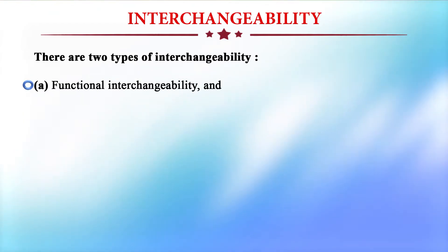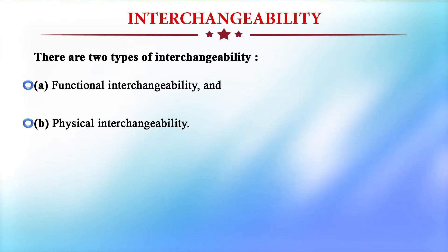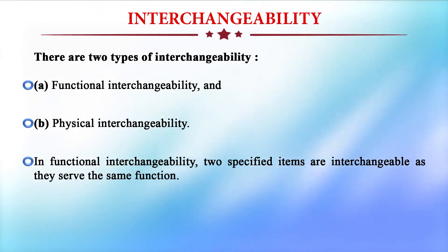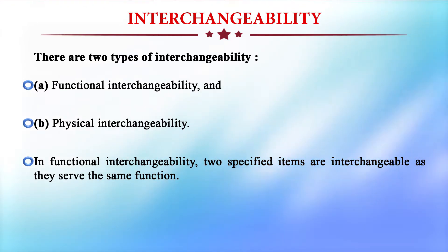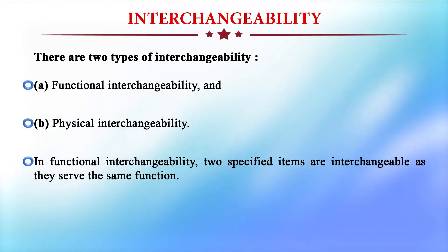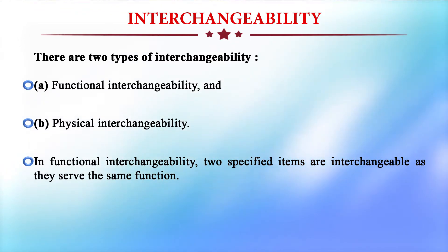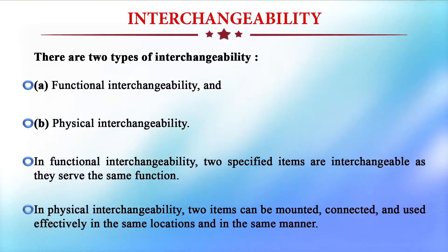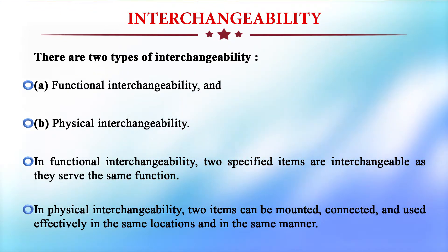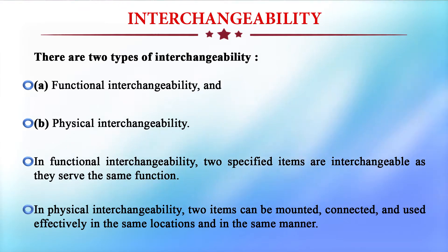There are two types of interchangeability: functional interchangeability and physical interchangeability. In functional interchangeability, two specified items are interchangeable as they serve the same function — the function of a part is similar so it can be used for many machines or products. In physical interchangeability, two items can be mounted, connected, and used effectively in the same location and in the same manner.